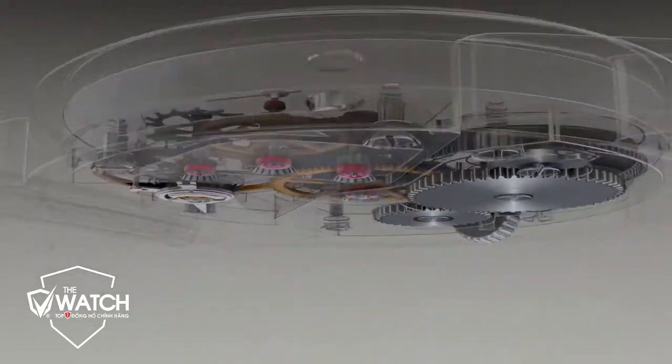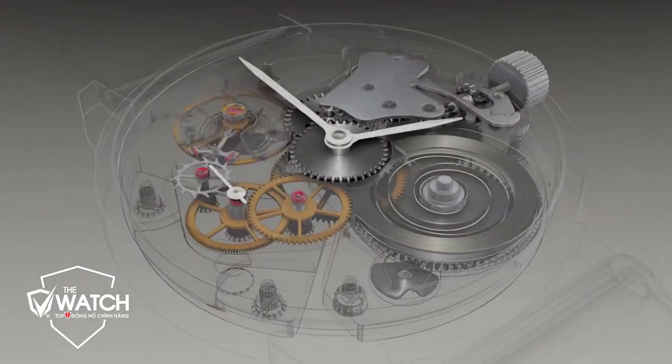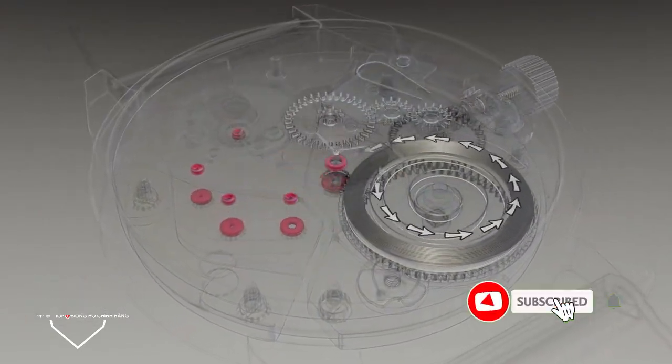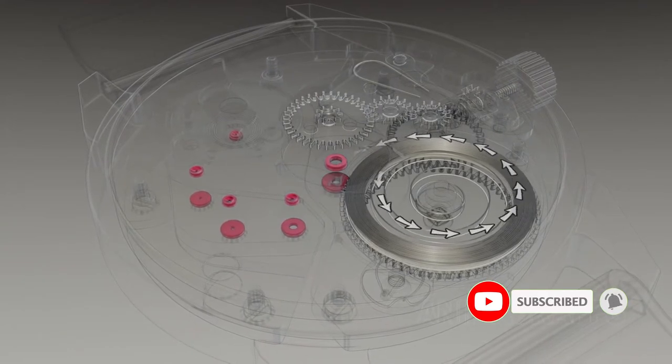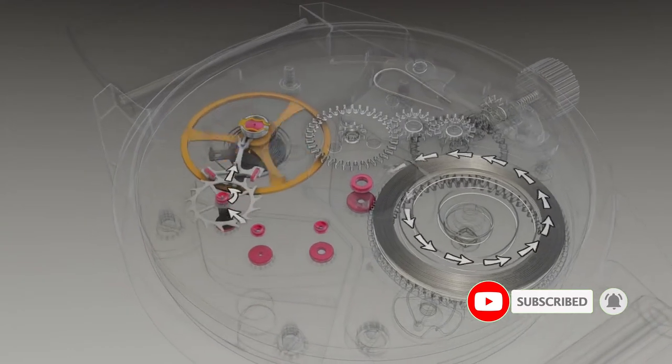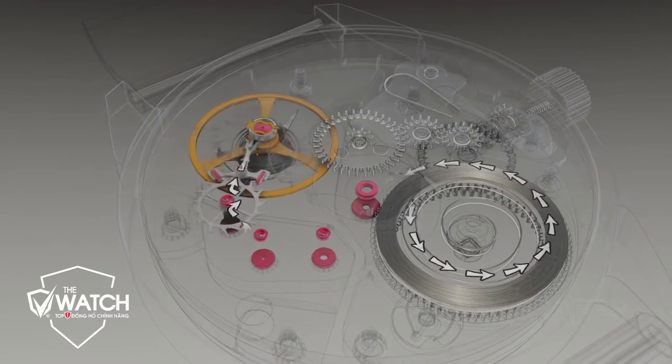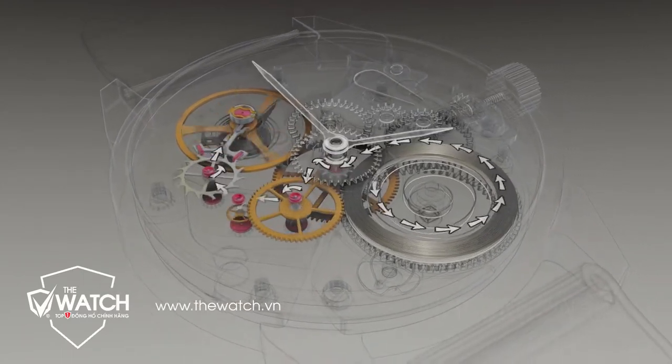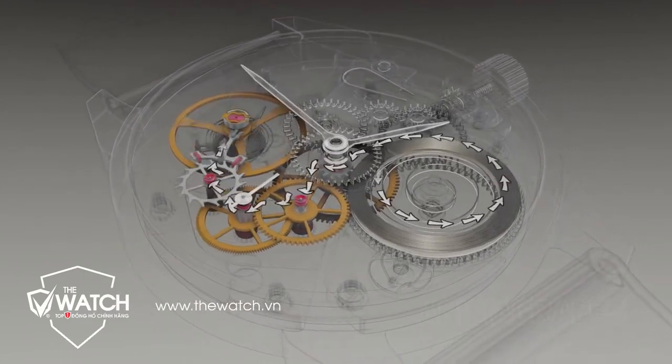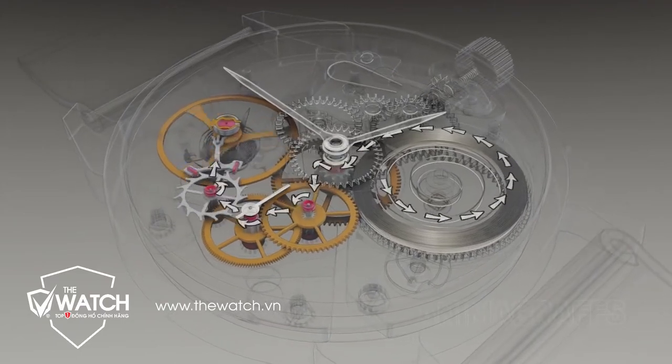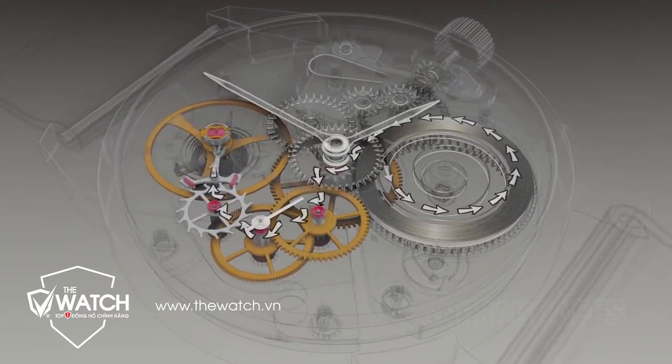Let's take a high-level view before diving into specific parts. Power is stored in the mainspring and released in reliable increments by the escapement assembly. The gears that connect the mainspring and escapement turn at various speeds, allowing the watch to tell time. Now let's look at each section in depth.